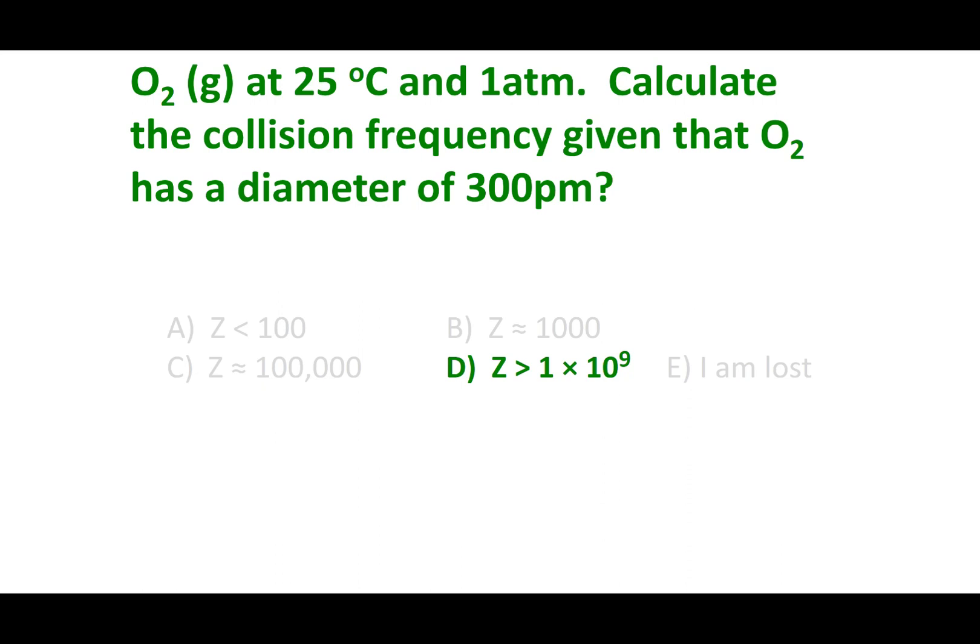What you can see is the oxygen molecules around you are colliding with each other over a billion times per second. And that's why if you have a gas that's moving 300 meters per second, it still takes a while to actually diffuse through because it's going under so many collisions per second.